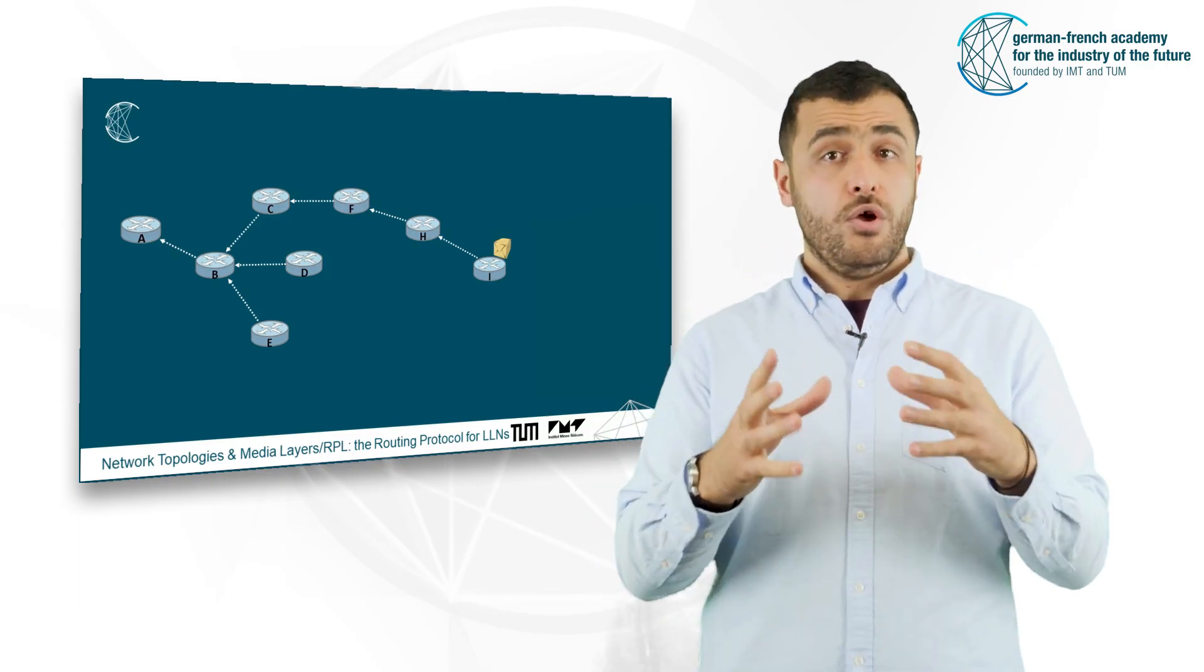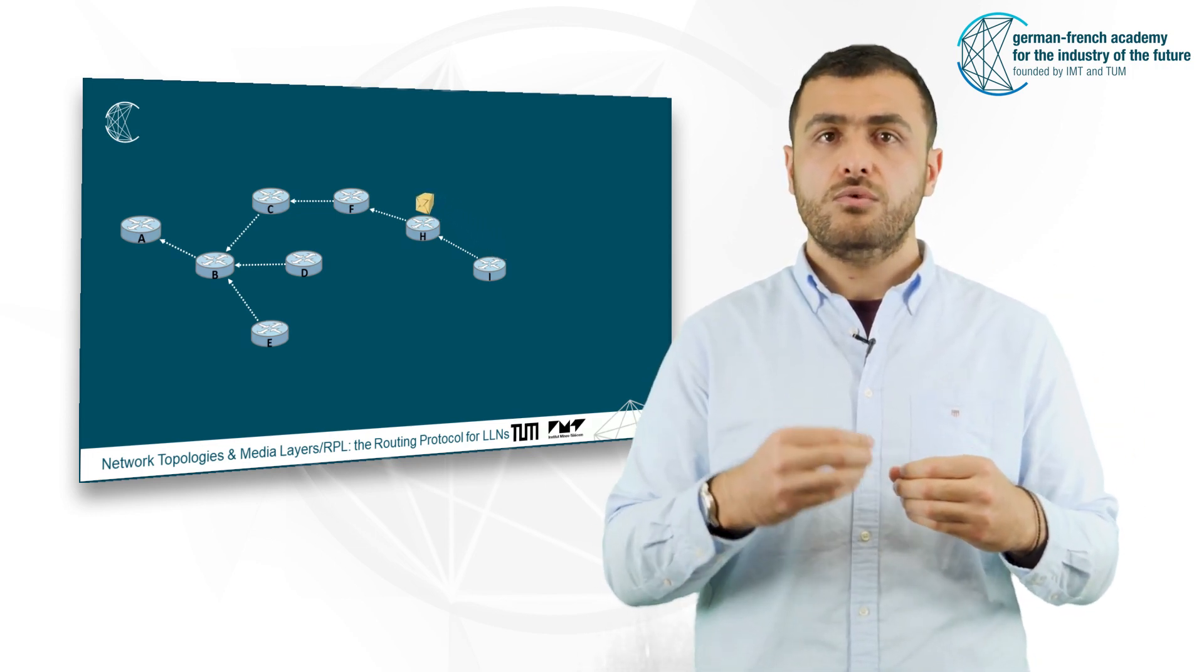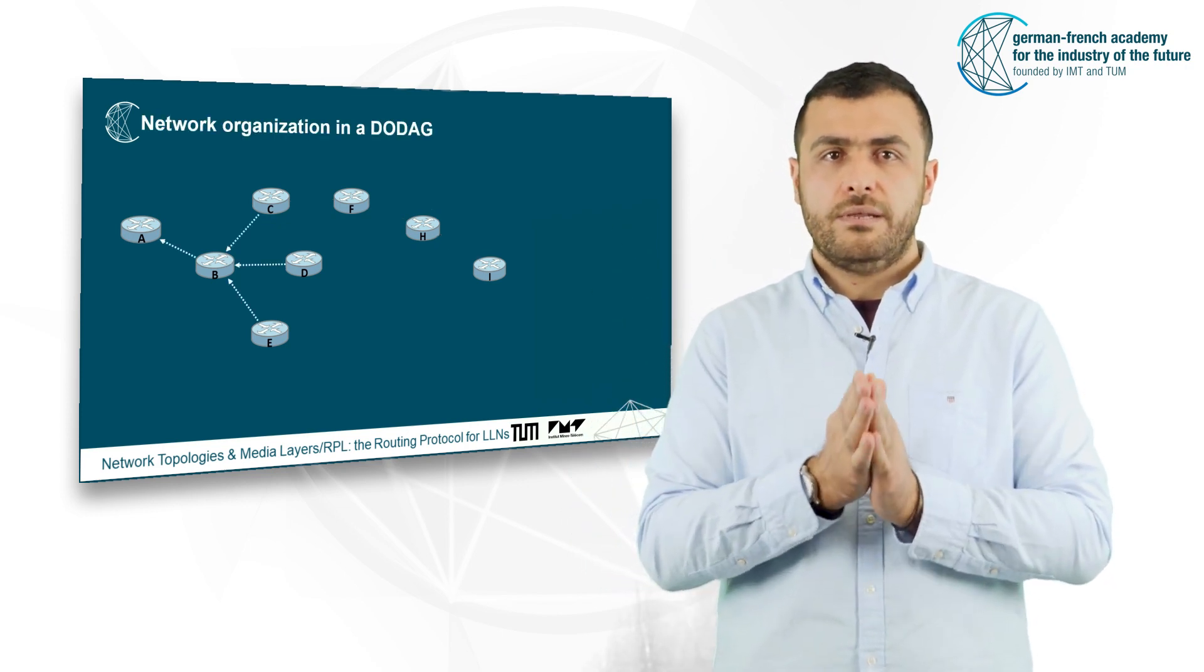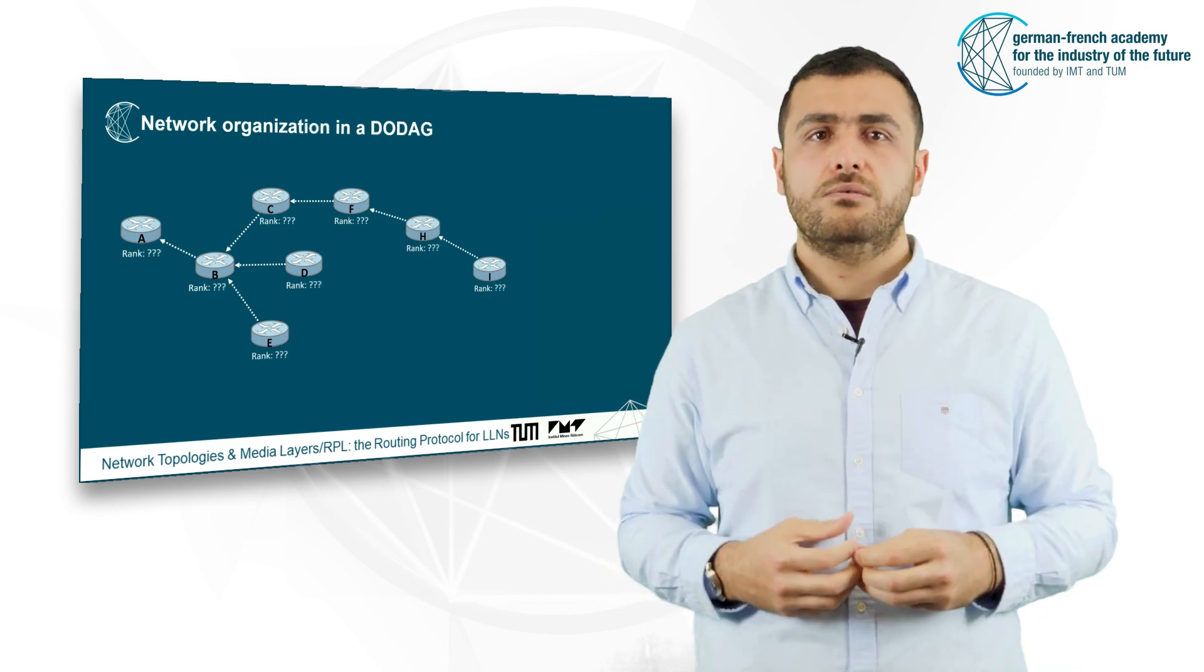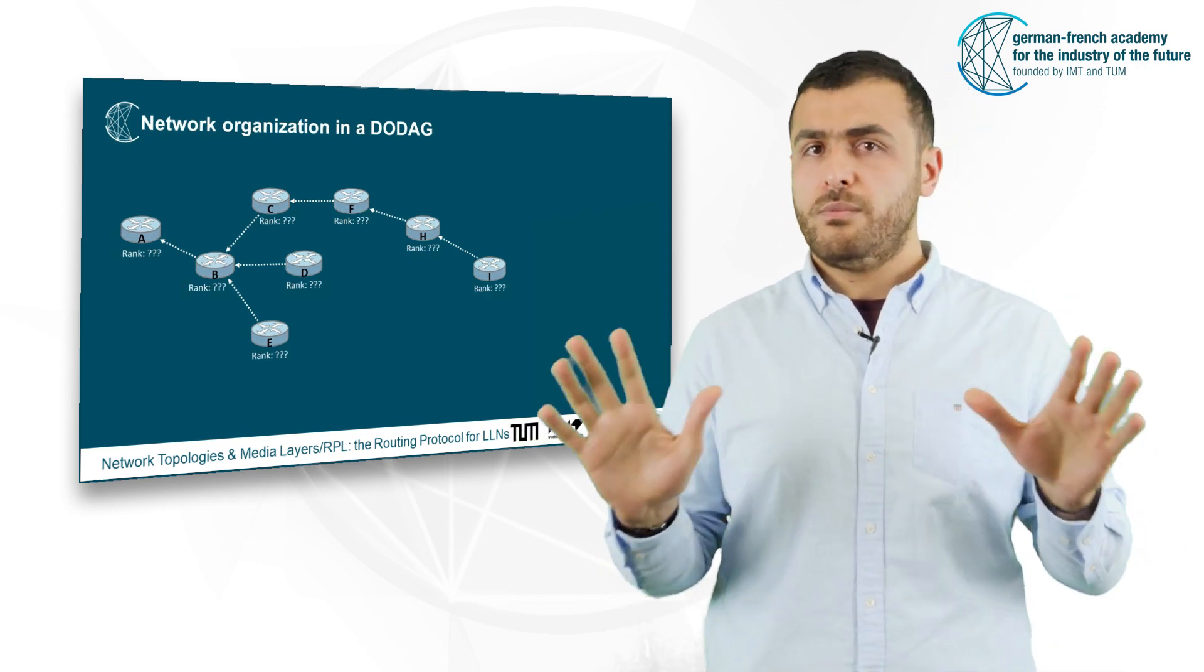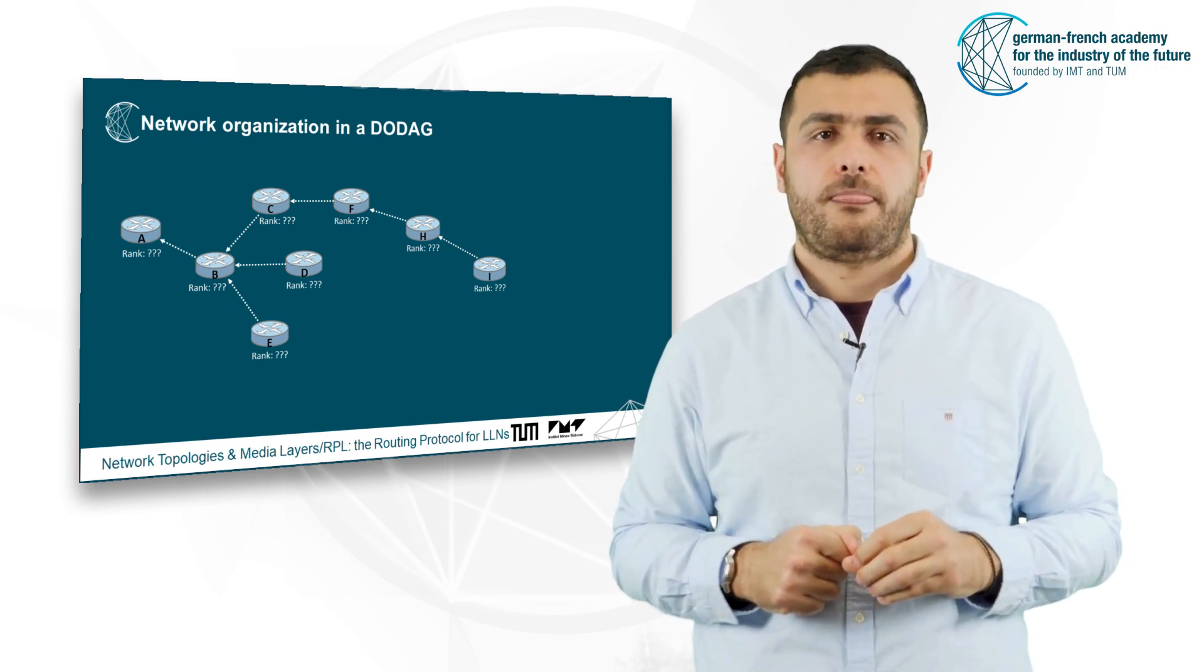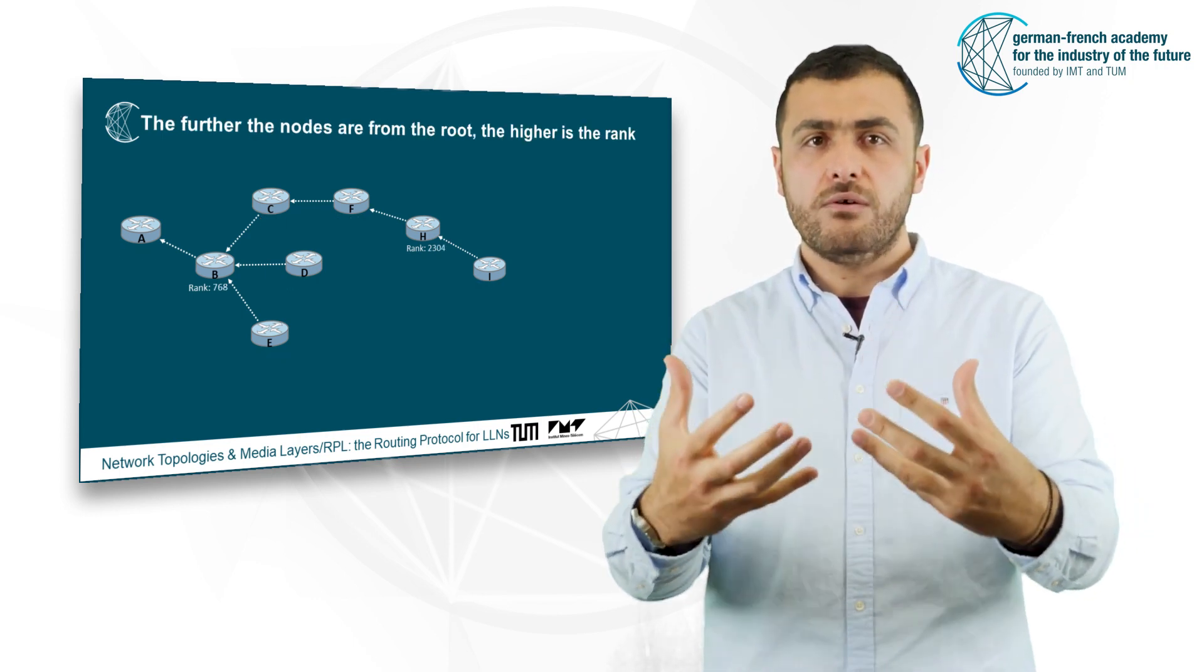So when node I has a packet to transmit to the root, it will send the packet to node H. In order to organize the network in a DODAG, each node will compute its distance to the root in a distributed manner. This distance is called rank. The further the nodes are from the root, the higher is the rank value.